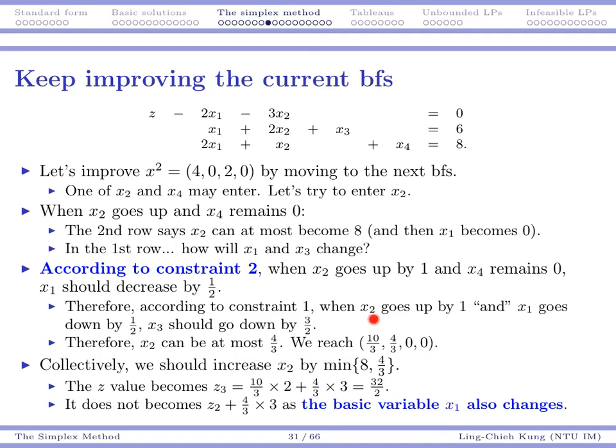And then that allows you to find that x2 can be at most 4 over 3 according to constraint 1. And then we know, okay, if we keep doing that in one iteration, then in the next step we will move to this particular solution. That just means when we are doing those calculations, we are comparing 8 and the 4 over 3. Constraint 2 tells us that at most x2 can be 8. Constraint 1 tells us that at most x2 can be 4 over 3. That's why we stop at 4 over 3.